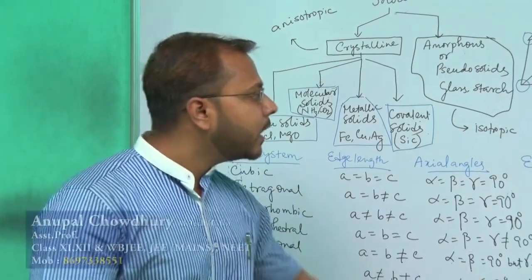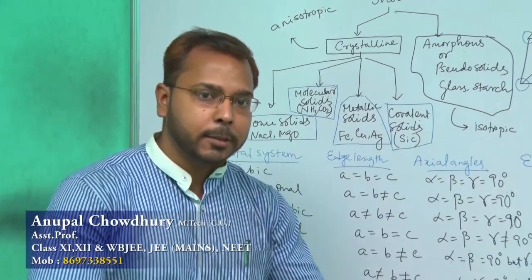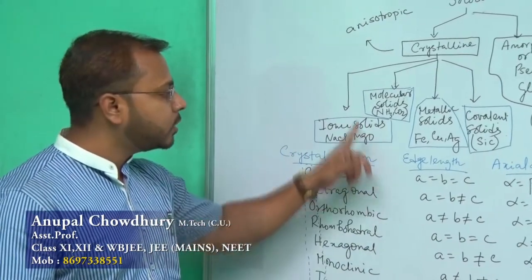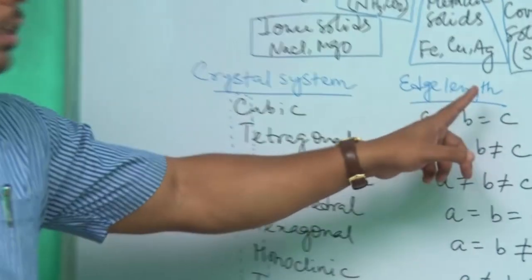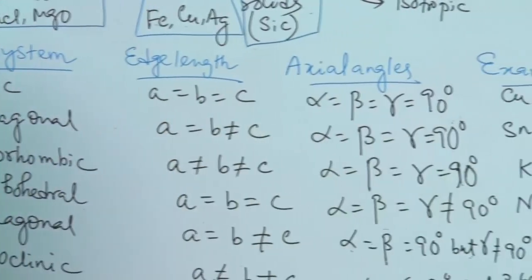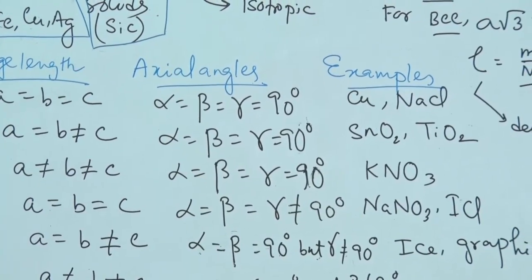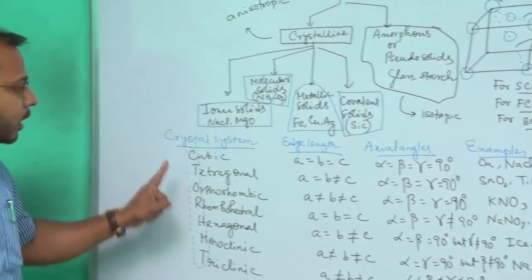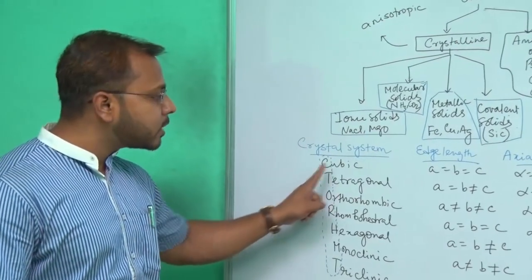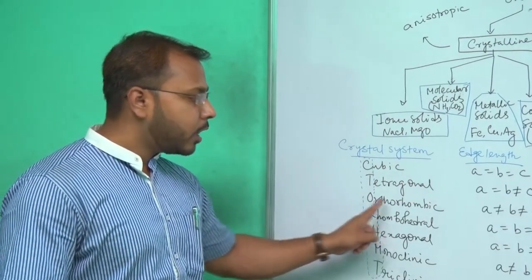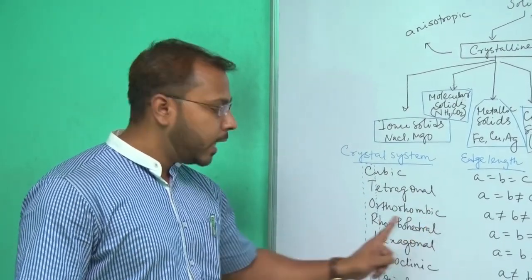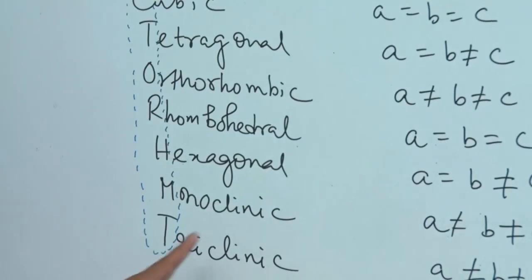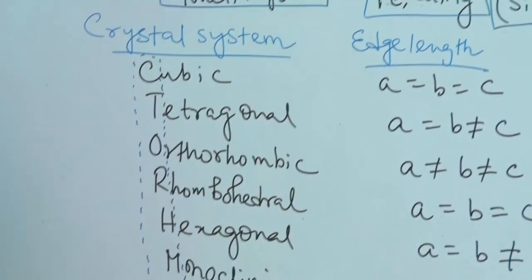We have seven crystal systems. I have made a chart showing edge length, axial angles, and examples. To remember them, use the trick: C TOR H MT — where C means cubic, T means tetragonal, O means orthorhombic, R means rhombohedral, H means hexagonal, M means monoclinic, and T indicates triclinic.